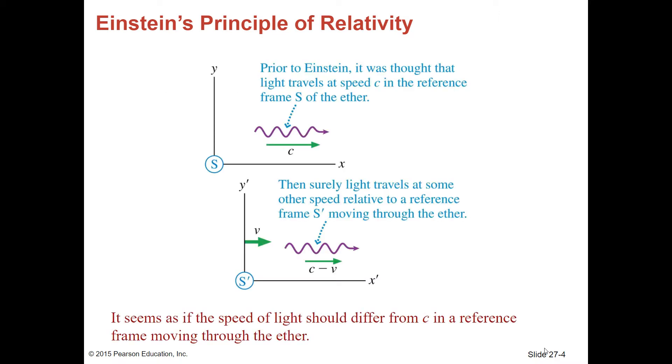Prior to Einstein, it was thought that light travels at speed C in the reference frame S of the ether. Then surely light travels at some other speed relative to a reference frame S prime moving through the ether.